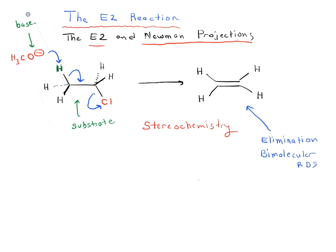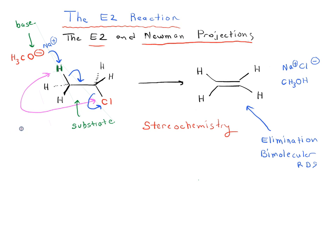You may also see the counter-ion — let's draw Na+, or K+ is fine too. This gives us Na+, Cl-, because Cl- is going to be our leaving group, as well as CH3OH. What's important here is to note the stereochemistry: the carbon-chlorine bond is in the plane of the page, and the carbon-hydrogen bond being removed by CH3O- is also in the plane of the page.